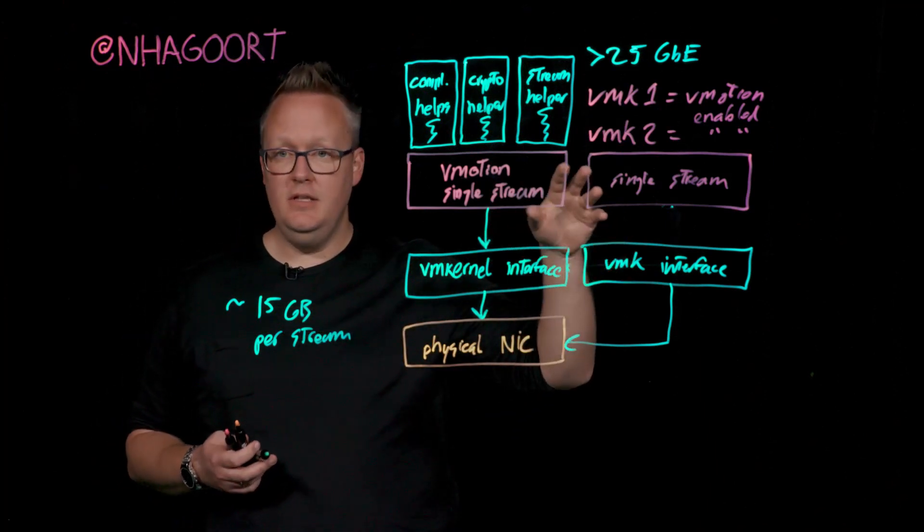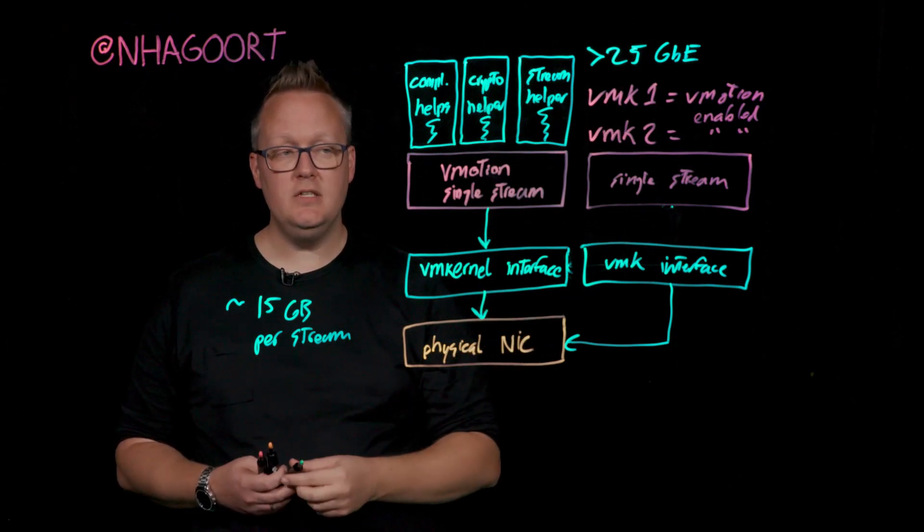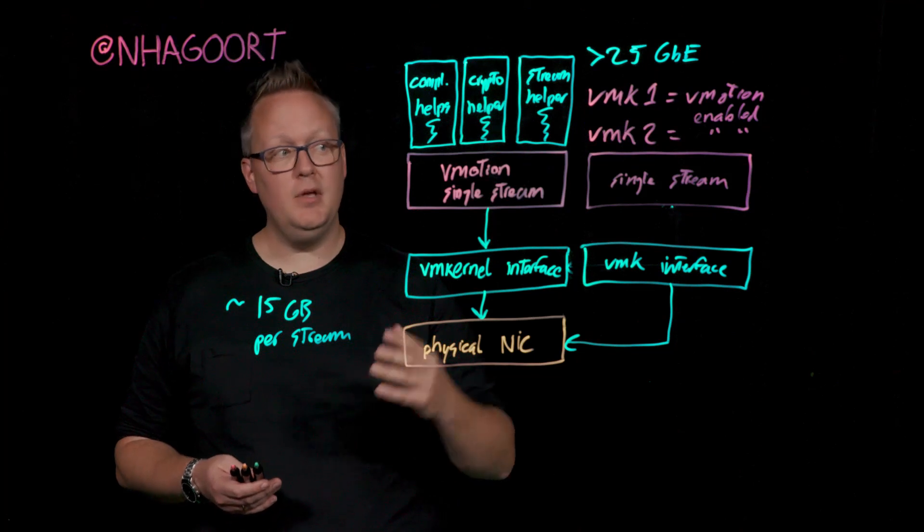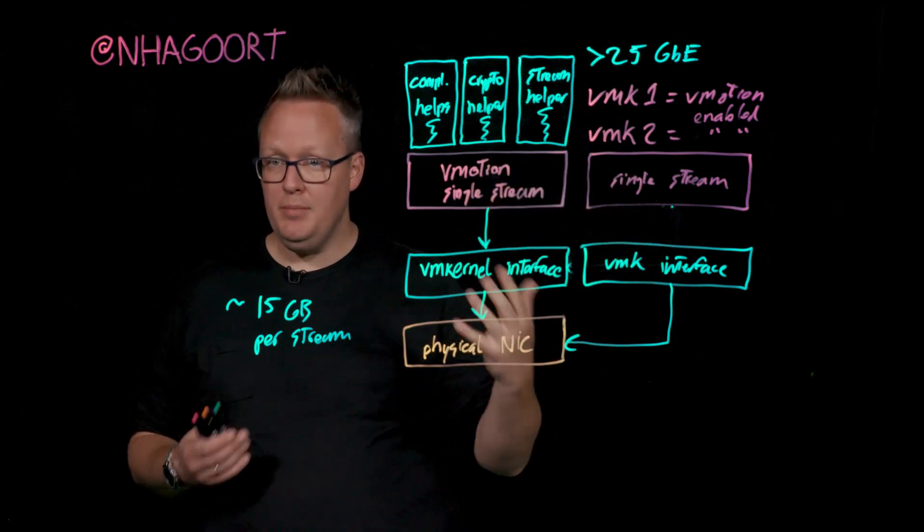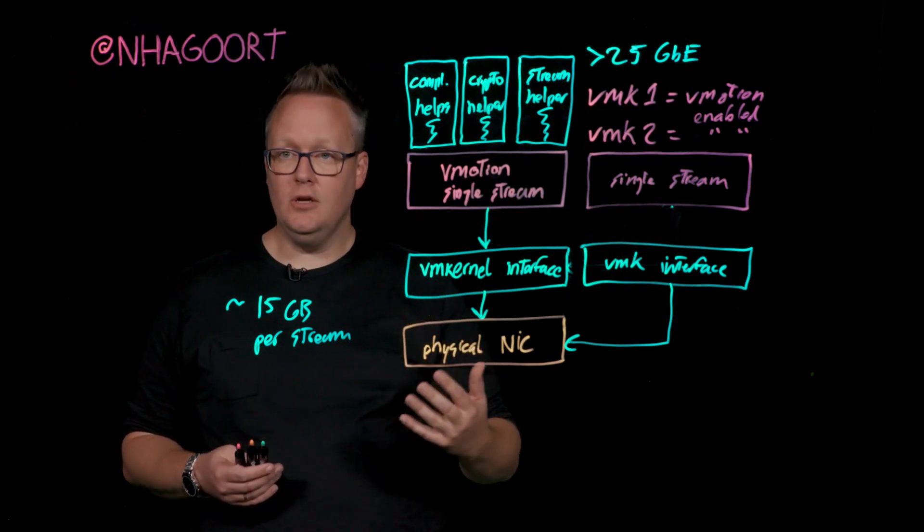We just discussed this model where you would spin up additional VM kernel interfaces, but that poses a problem when you look at it from an operational perspective, because each and every VM kernel interface now needs an IP address. That might introduce some operational overhead.